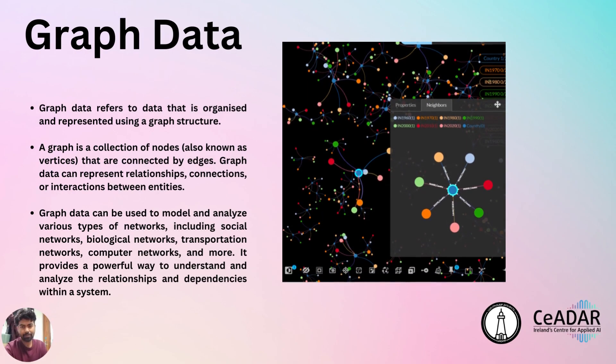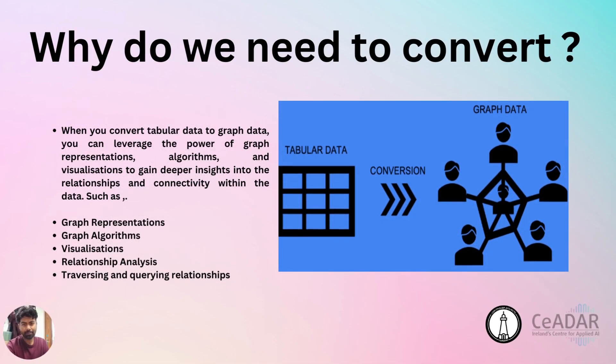Graph data refers to data that is organized and represented using a graph structure. A graph is a collection of nodes, also known as vertices, connected by edges. Graph data can represent relationships, connections, or interactions between entities. In a graph, nodes represent individual entities such as people, objects, or concepts, while edges represent the relationships or connections between those entities. Graph data allows for the representation of complex, interconnected relationships not easily captured by traditional tabular data structures.